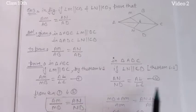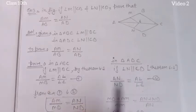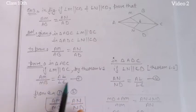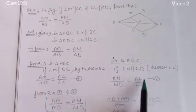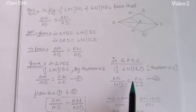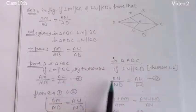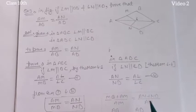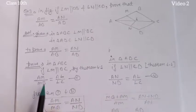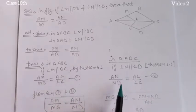From equations 1 and 2, observe that AL upon LC is common to both. Since AL/LC appears on both sides equally, we can write: AM upon MB equals AN upon ND, because both are equal to the same quantity AL upon LC.